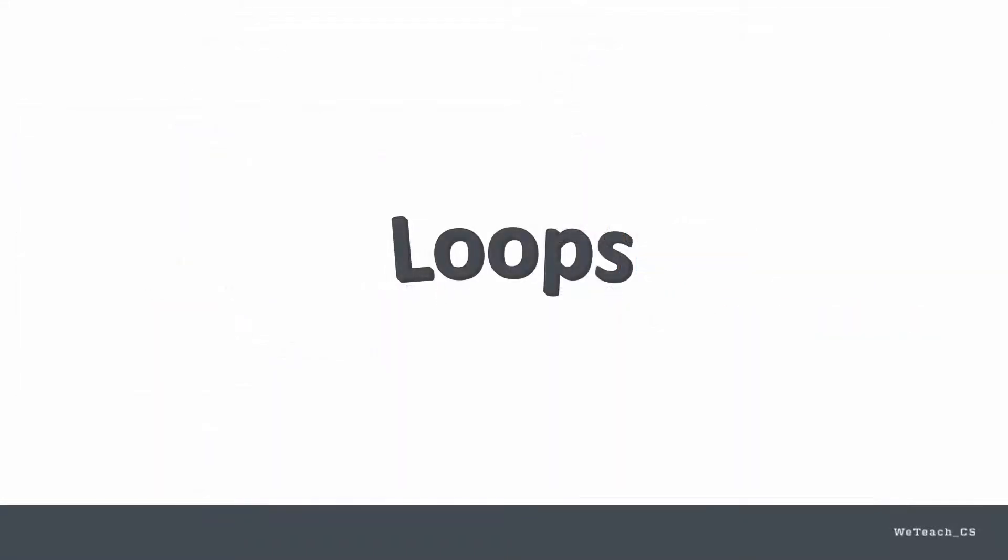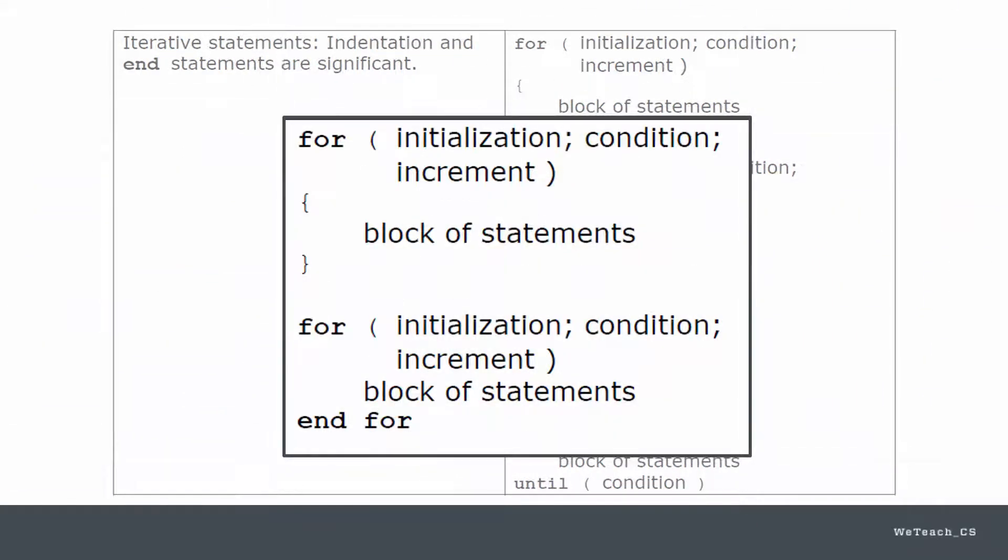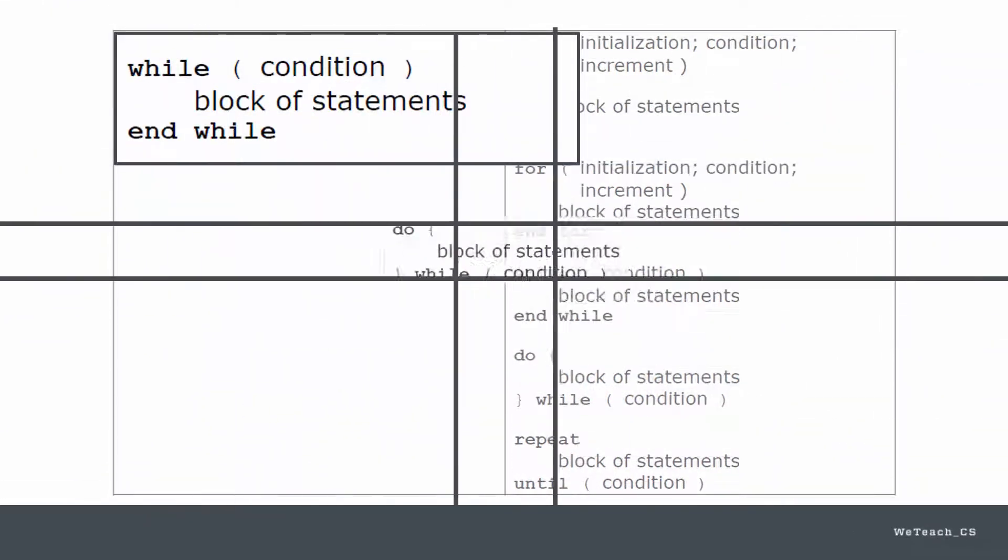There are three loop structures most commonly associated with modern programming languages, the FOR loop, WHILE loop, and DO WHILE loop.